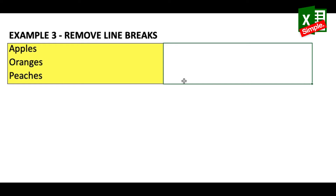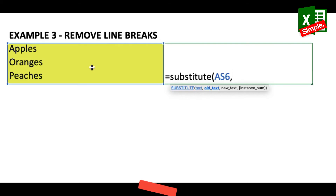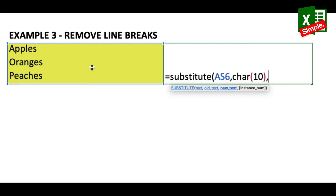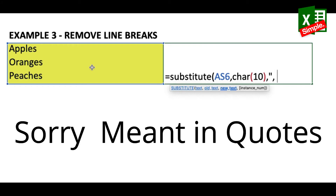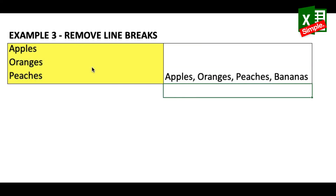We'll use =SUBSTITUTE, select the cell as text, comma, old text is the line break which is represented by CHAR(10), comma, new text is a comma followed by a space in quotes — so ", " — to ensure there's a space between the comma and the next word. Close the bracket and press Enter. All words are now on a single line with commas between them and all line breaks removed.